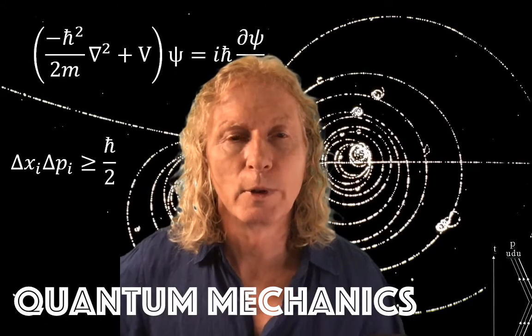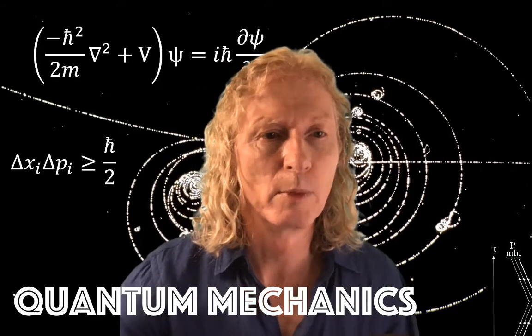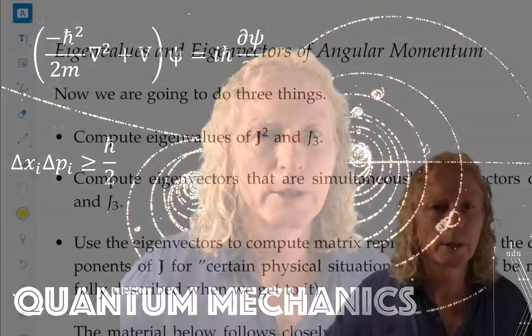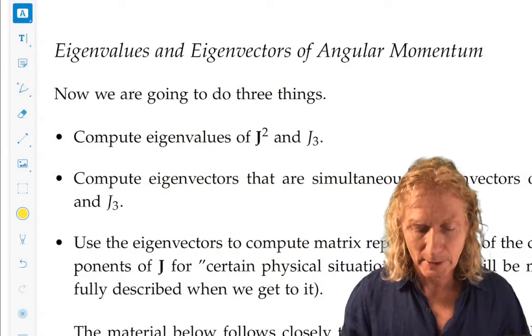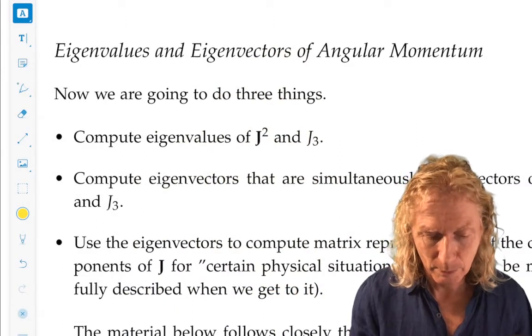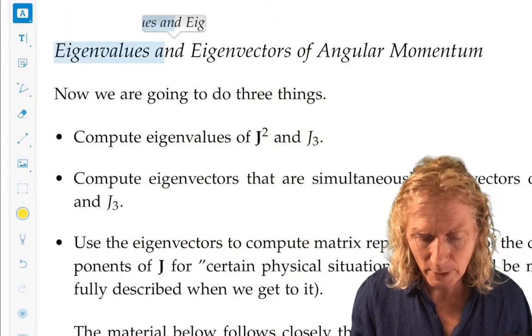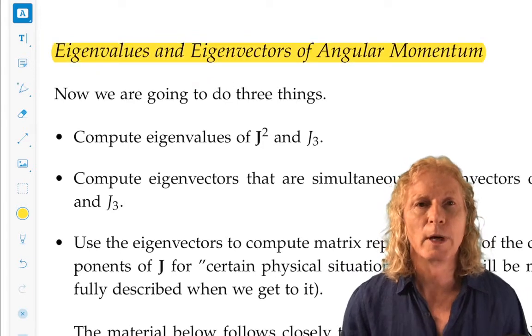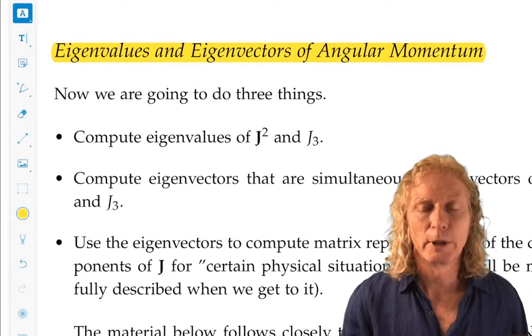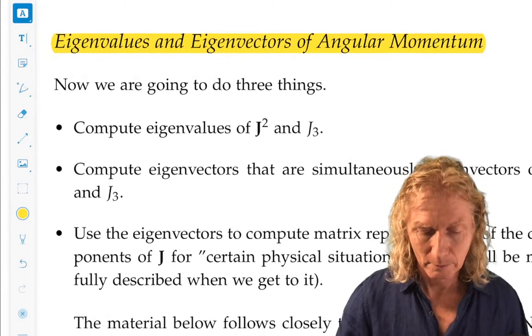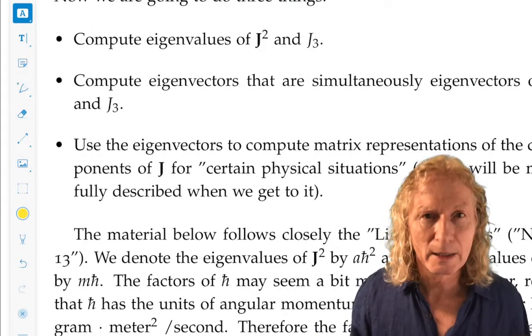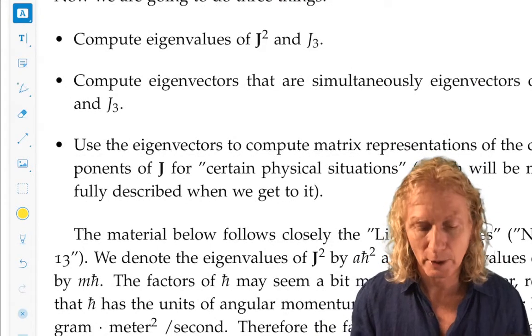Today we're going to continue with the quantum theory of angular momentum. In particular, we're going to get into the explicit eigenvalue and eigenvector problem for angular momentum. We're going to do three things. We're going to compute the eigenvalues for j squared and j3.